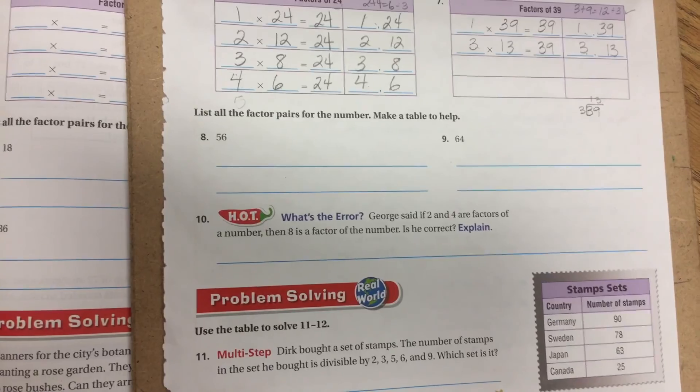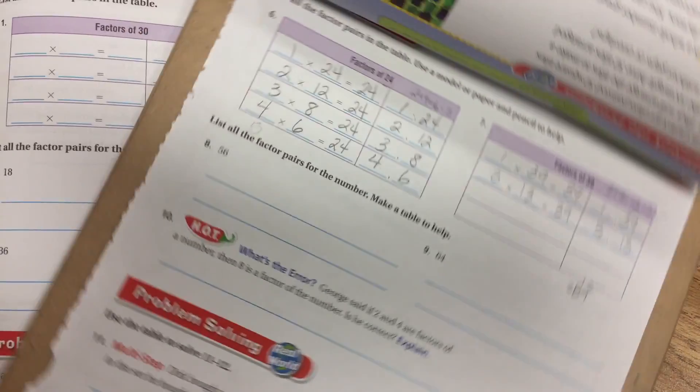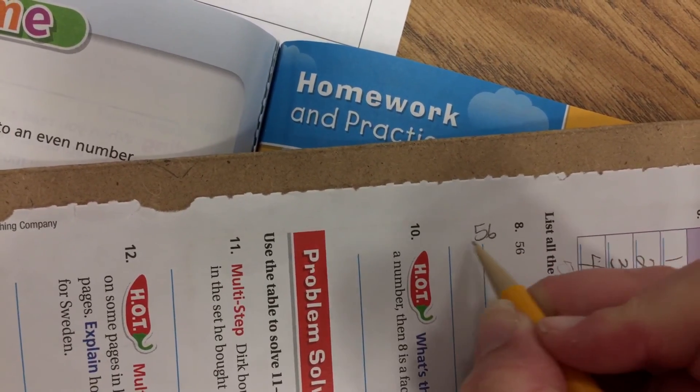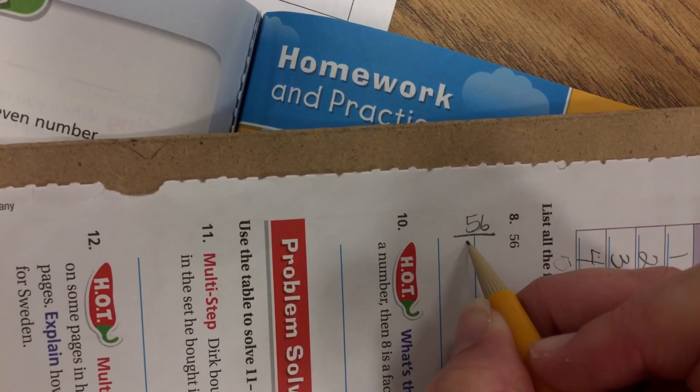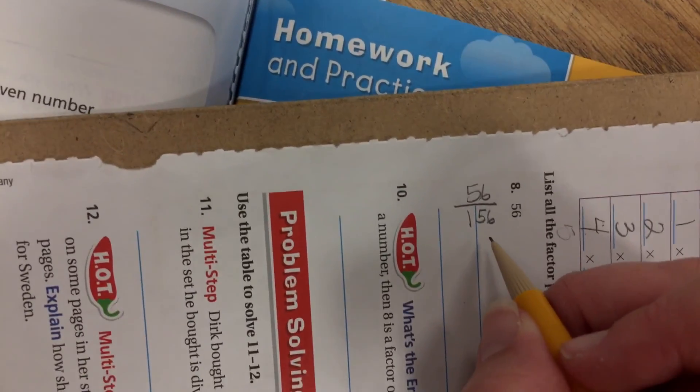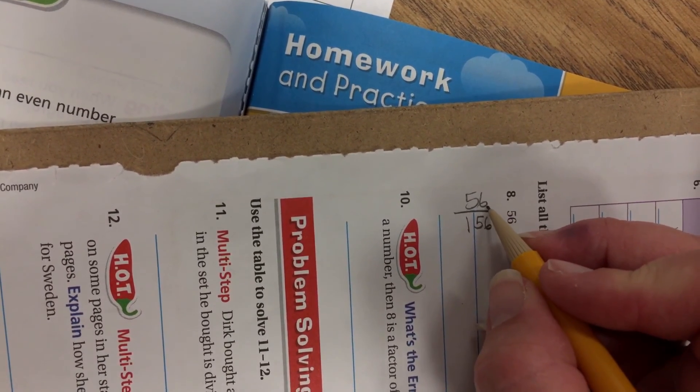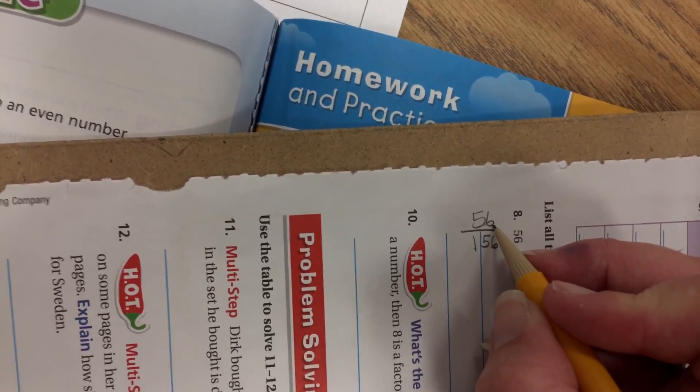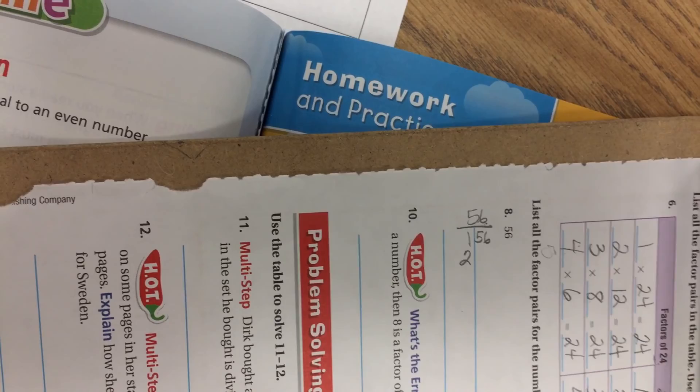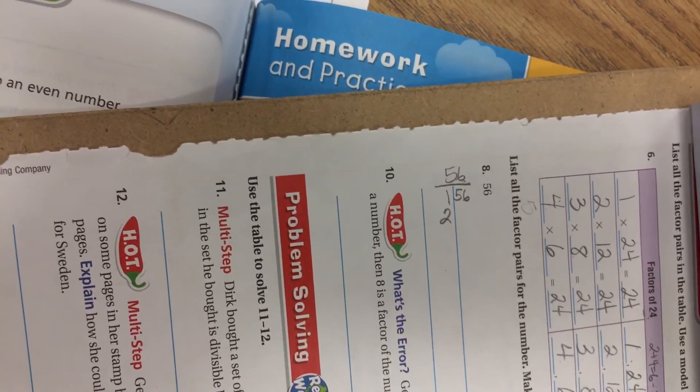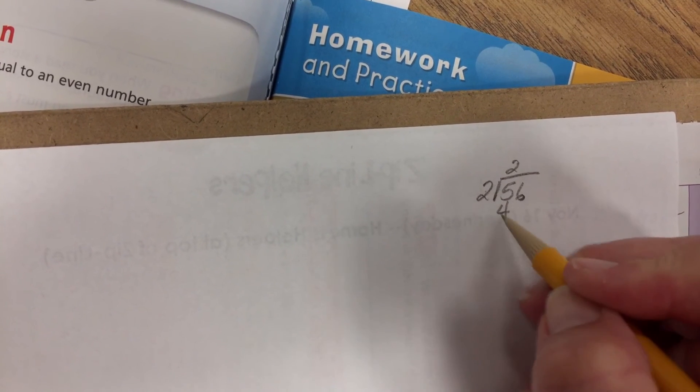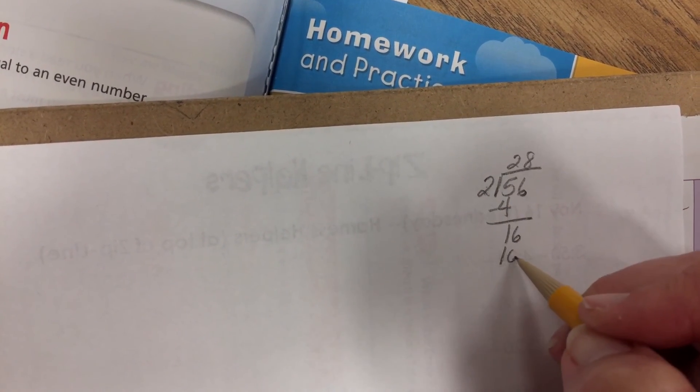Now I move down here and it says list all the factor pairs for the number. Make a table to help. Well, if I were you, I would go ahead and just turn your paper and use what it has right here. Use this factor tree. This little line right here. Do 56 and make that my factor T. So we know 1 and 56. Is 56 divisible by 2? What is my 2 rule? A number that ends in an even number. Is this an even number? Yes, it is. I don't know what that is. So therefore, I'm going to have to take a piece of notebook paper, and I'm going to have to divide. I'm doing this before I even start. Should I have a remainder? No, because I know that 56 is evenly divisible by 2. Perfect. So 2 times 28 is 56.